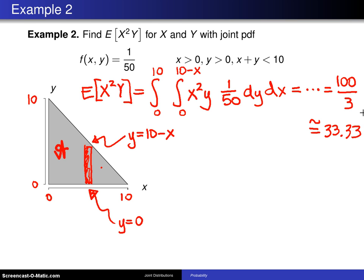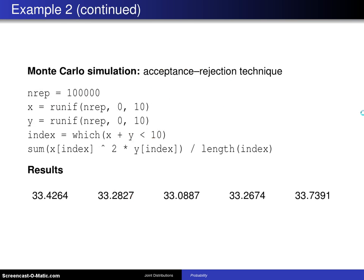you can run a Monte Carlo simulation, and that's what is done on the next page. In this Monte Carlo, there is something known as the acceptance rejection technique, and here's the way that works. Here is x, here is y, and we label 10 here and 10 here.